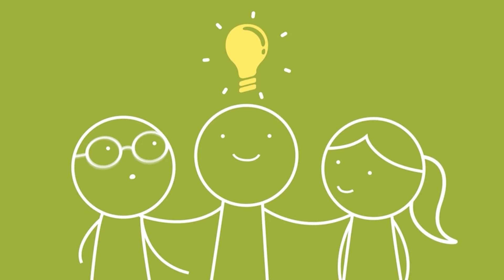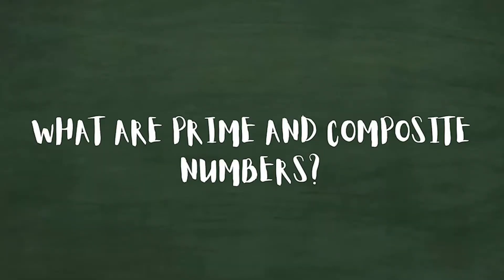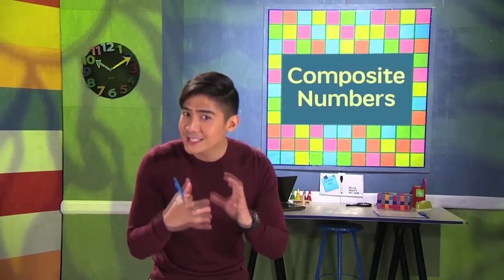Isip, plasip. Ang mga number na maraming magkakaibang factors, kagaya ng 40, ay tinatawag na composite numbers. Composite kasi sila ng maraming factors, kaya composite ang tawag sa kanila.